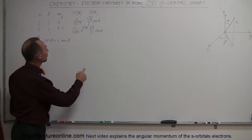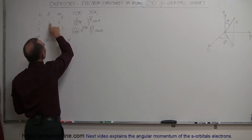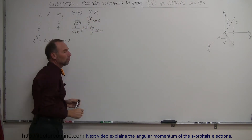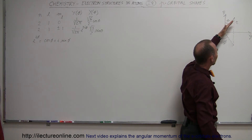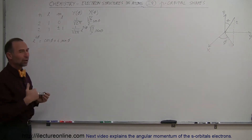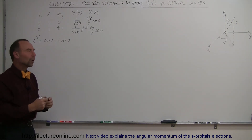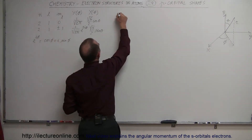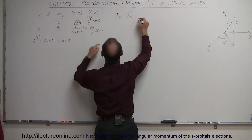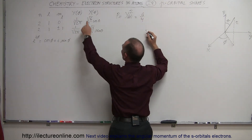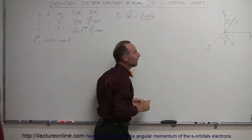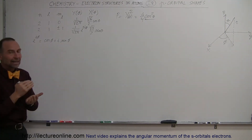Going back to the solution of the wave equation — the Schrödinger equation — we'll see that in the phi direction for l equals 1 and m sub l equals 0, there's no dependency on the phi angle, but there is a dependency on the angle in the theta direction. To calculate the probability of where the electron would be, you square the wave function. So the probability in the theta direction equals some constant — 6 over 4 — times cosine squared of theta.